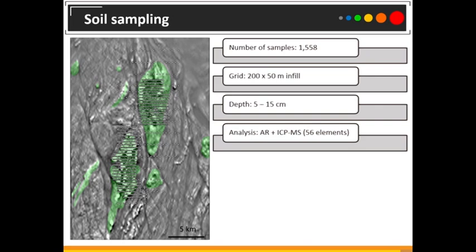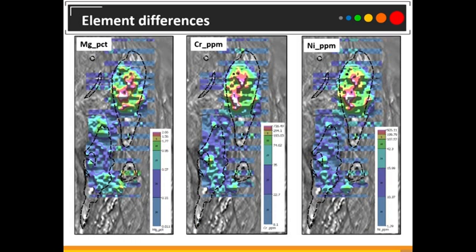After QA/QC and cleaning the data, the first thing I do is plot up maps. In this case, looking for mafics, the elements I chose were magnesium, chrome, and nickel. In this area, magnesium is actually not too mobile, which is quite surprising, so I could use it. On the percentile maps you can instantly see a relationship between magnesium, chrome, and nickel. The black lines mark the outlines of the intrusions based on the geophysics. The large northern intrusion has high magnesium, high chrome, and high nickel. Interestingly, the southern intrusion has none of these elements associated with mafics or ultramafics elevated — which was quite curious looking at those elements alone.